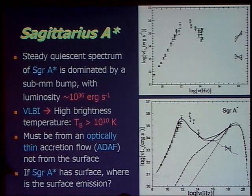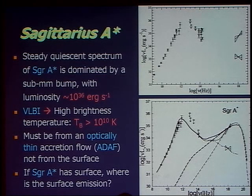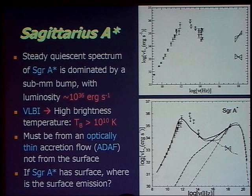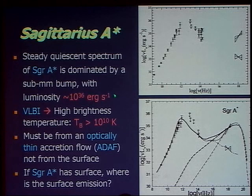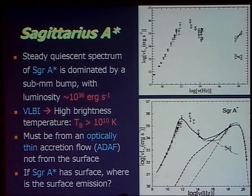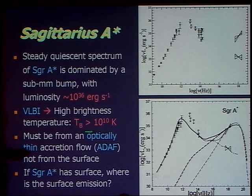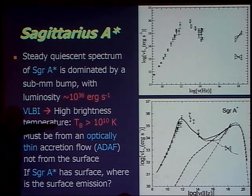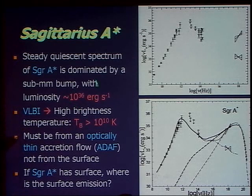Now I want to talk about Sagittarius A*, because we started with Sagittarius A* with Reinhard Genzel. You all know the facts: it's a very dim black hole at the center of our galaxy, with a luminosity of 10^36 ergs per second and a black hole mass of 4 million solar masses. The emission, coming in the submillimeter, has a brightness temperature greater than 10^10 Kelvin — measured by VLBA from the known size and flux. So it is extremely high temperature radiation, with very low flux — a very optically thin kind of emission.